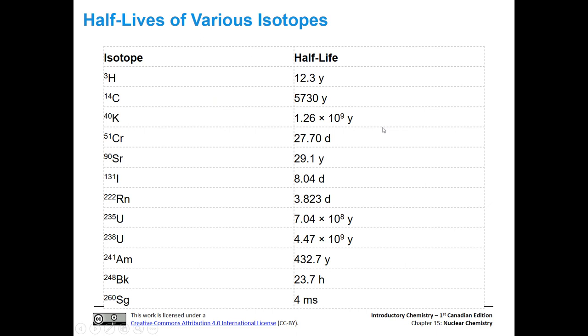Here's just a list of half-lives of various isotopes. You can see some of them are really long, some of them are relatively short. Here's tritium that we just looked at. Carbon-14, 5730 years. Look at potassium-40, 1.26 times 10 to the ninth years. Or we can also have the order of days, so 51-chromium, about 27, 28 days.